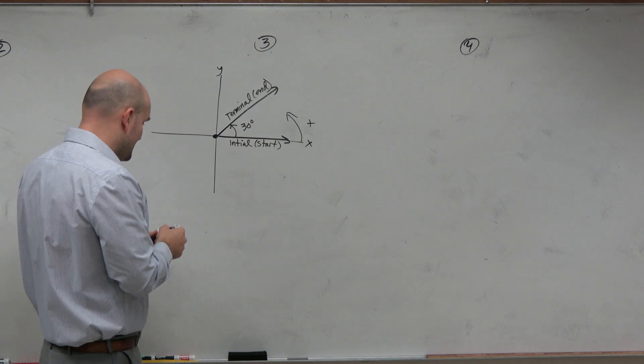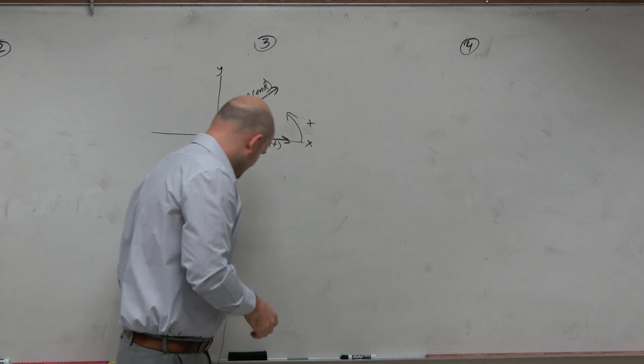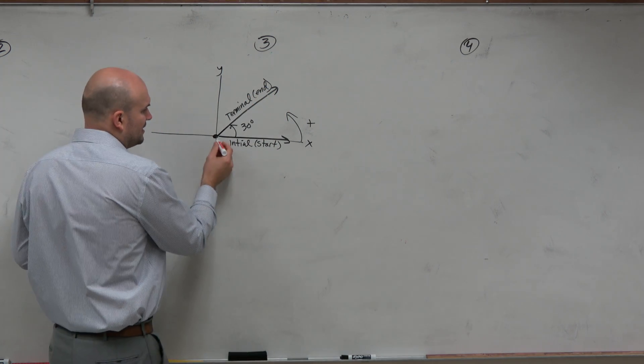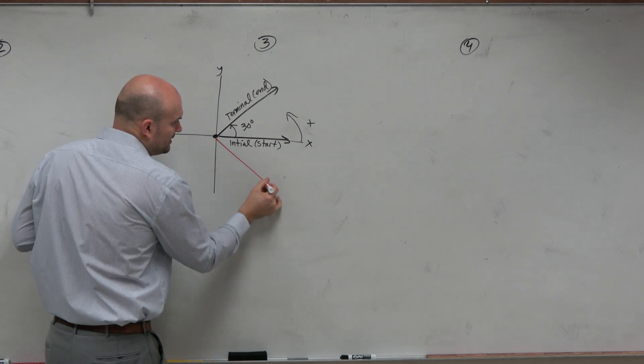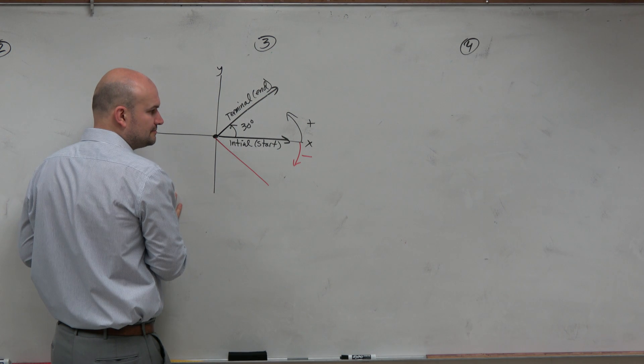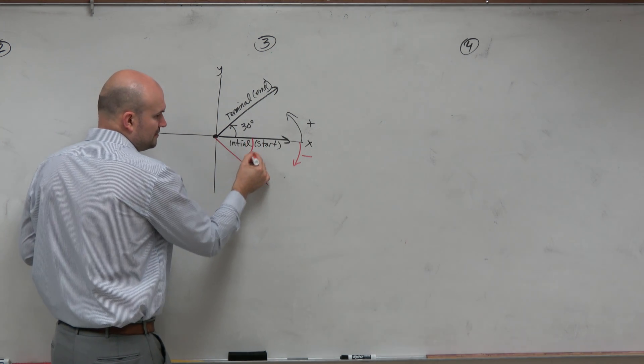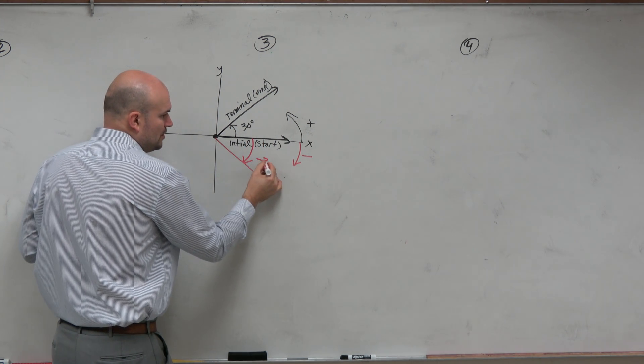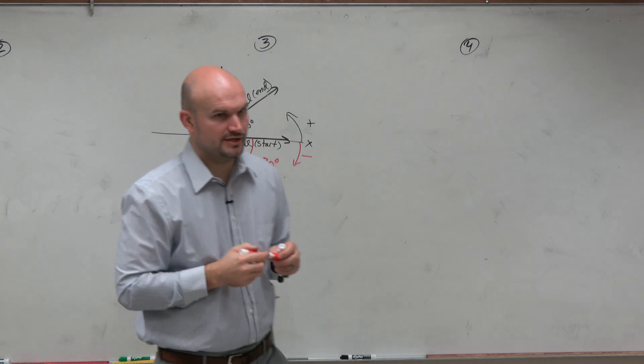If I wanted to represent this angle in a negative direction, which I saw some of you kind of doing, we would go clockwise. So therefore, this angle, if I represent it like this, would represent negative 30 degrees.